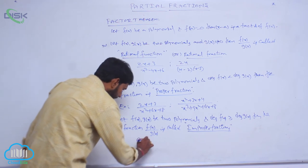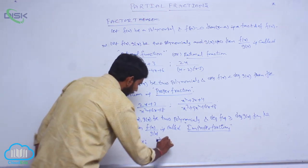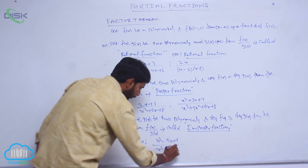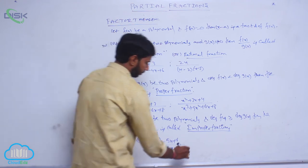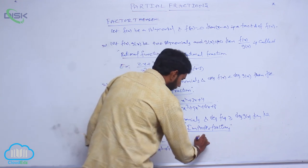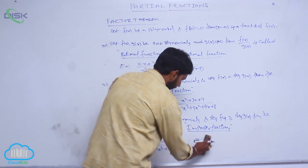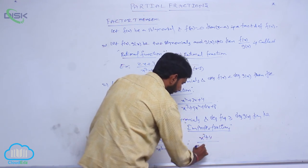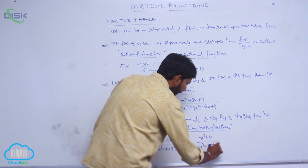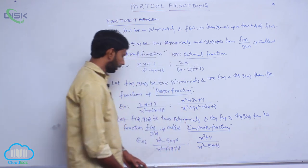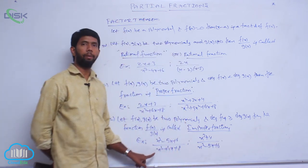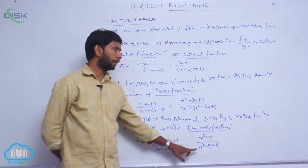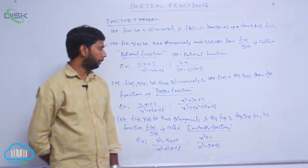Examples: x squared minus 5x plus 6 by x squared plus 4x plus 8, or 2x cubed plus 4 by x squared minus 5x plus 6. Here in the first example the degree of numerator is 2 and degree of denominator is 2, so it is an improper fraction. In the second, the degree of numerator is greater than the degree of denominator, which is also an improper fraction.